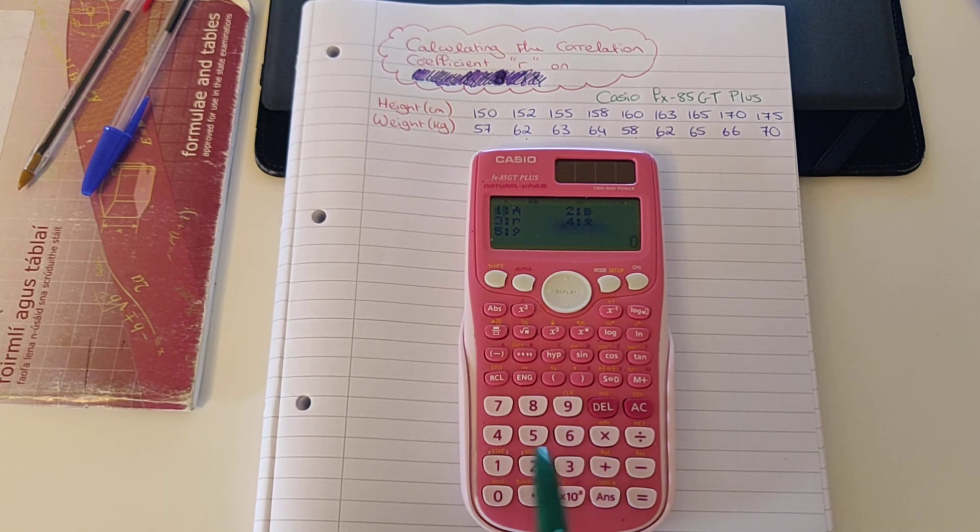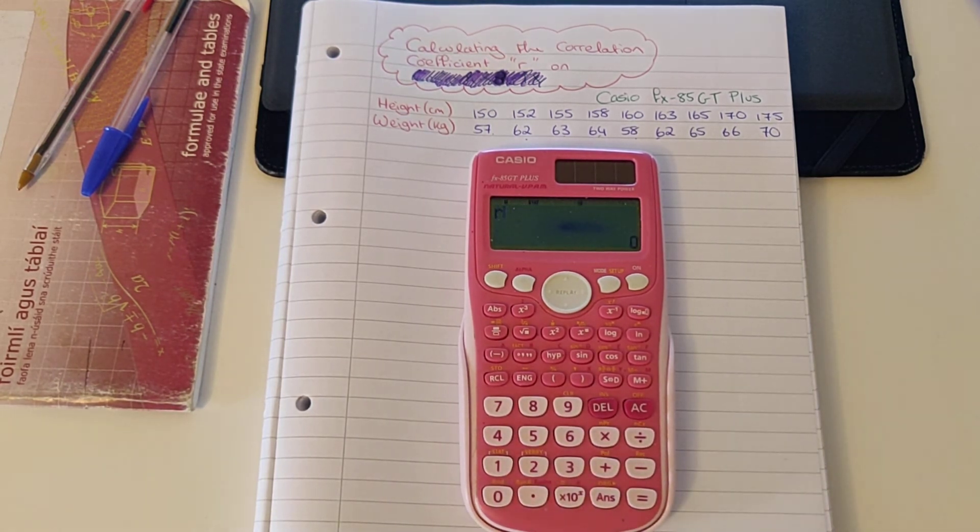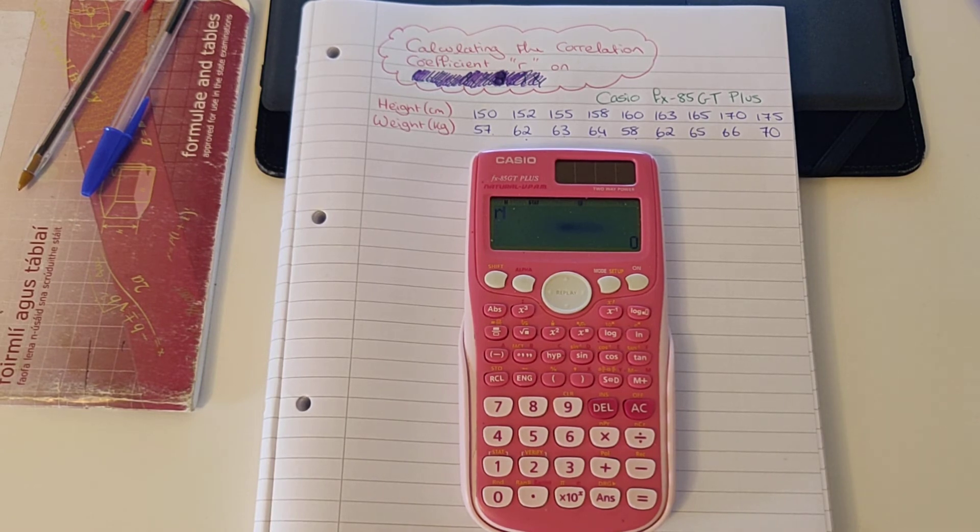Then we're going to press 3, which will appear with an R on the screen, which we know is our constant for our correlation coefficient, and we're going to press equals.